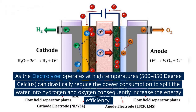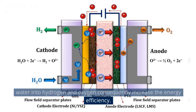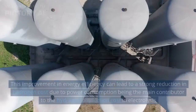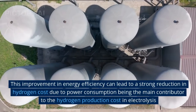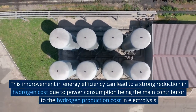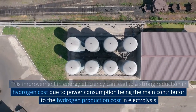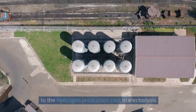As the electrolyzer operates at high temperatures — 500 to 850 degrees Celsius — it can drastically reduce the power consumption required to split water into hydrogen and oxygen, consequently increasing the energy efficiency. This improvement in energy efficiency leads to a strong reduction in hydrogen costs, since power consumption is the main contributor to hydrogen production cost in electrolysis.